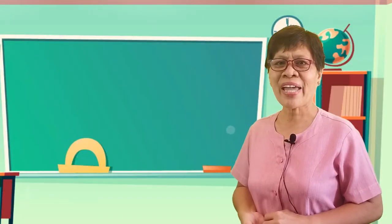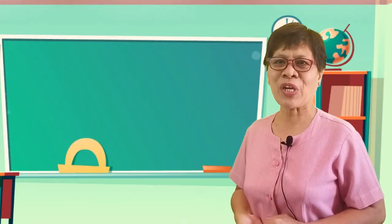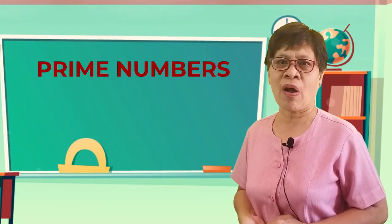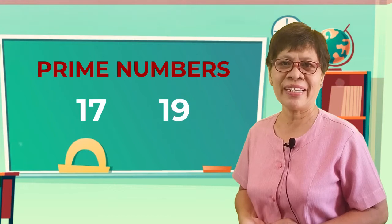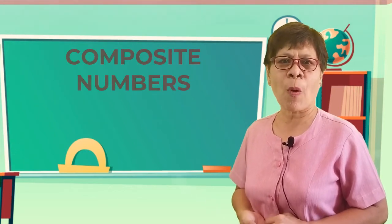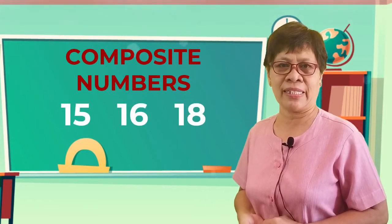All right, time's up. Let's now check your answers. The prime numbers are 17 and 19, while the composite numbers are 15, 16, and 18.